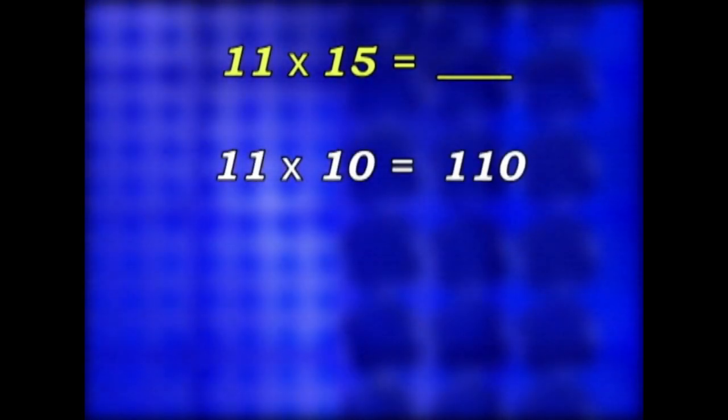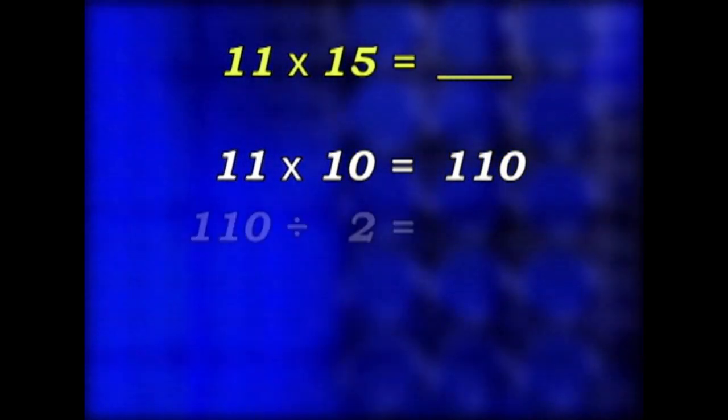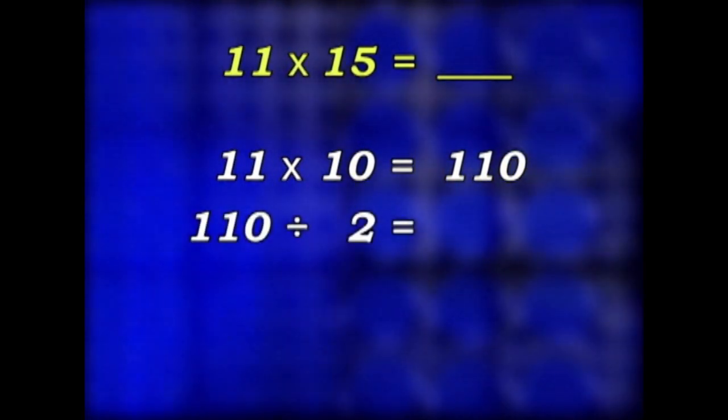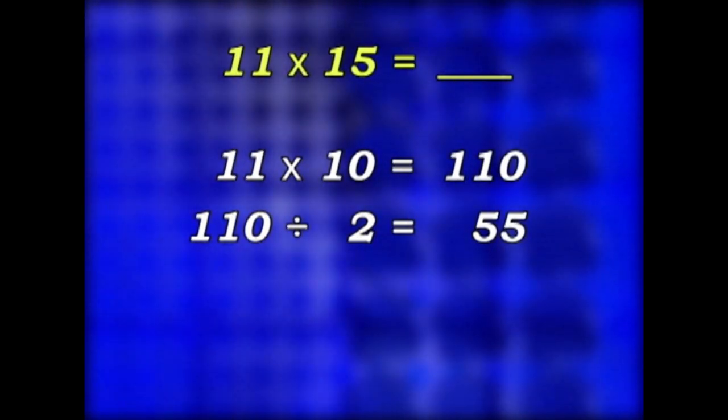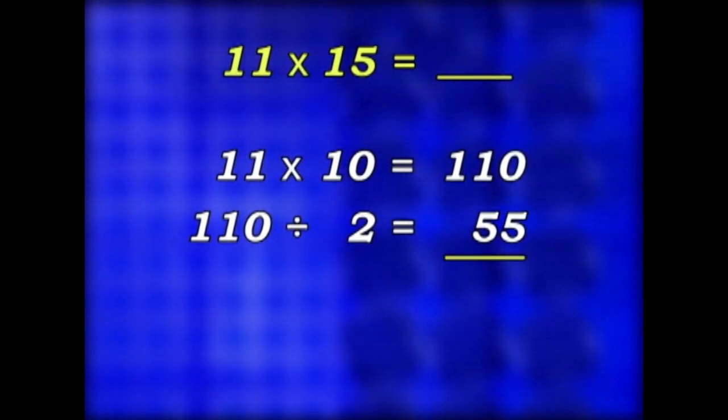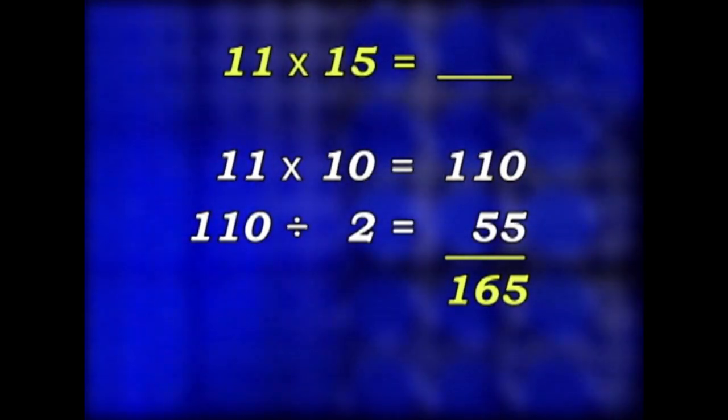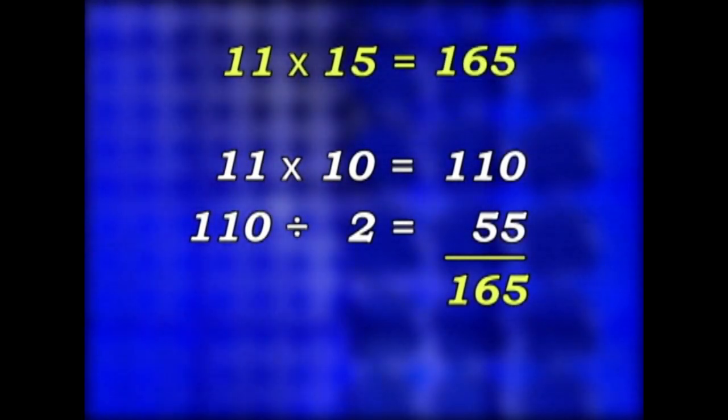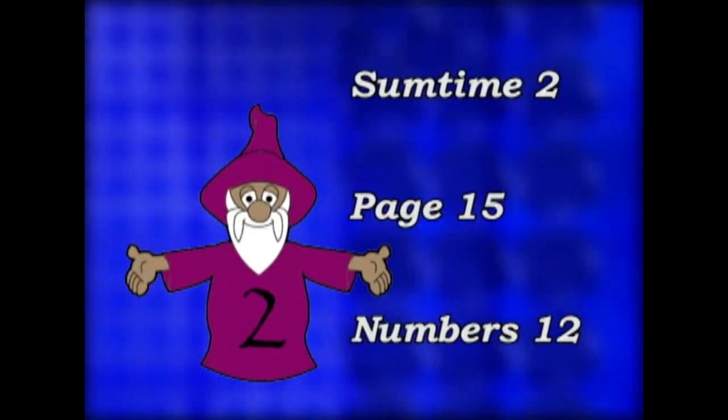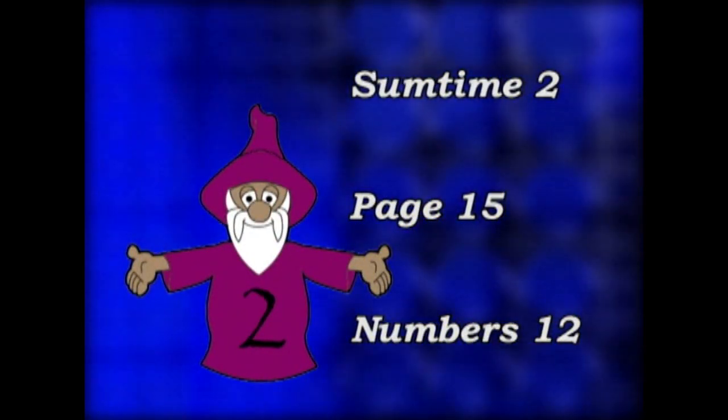One more. 11 times 15. Well, 11 times 10 is 110. 5 is half of 10, so half of 110 is 55. Add 110 and 55 and you get 165. So 11 times 15 is 165. That's all for today. See you soon.